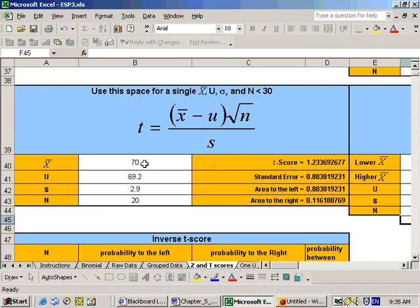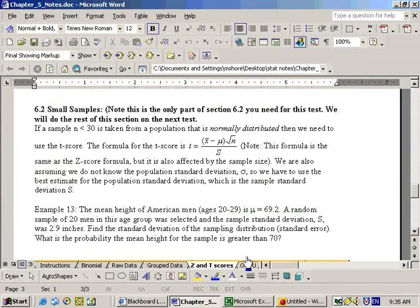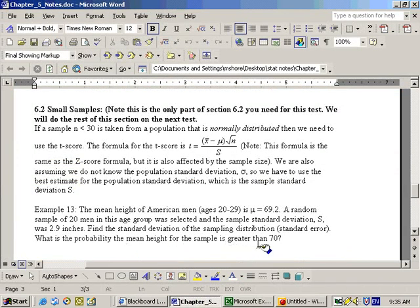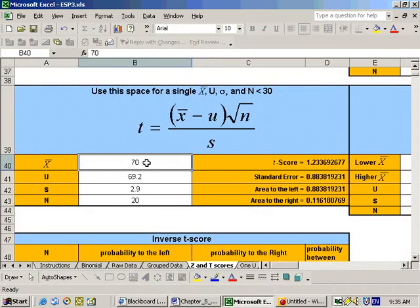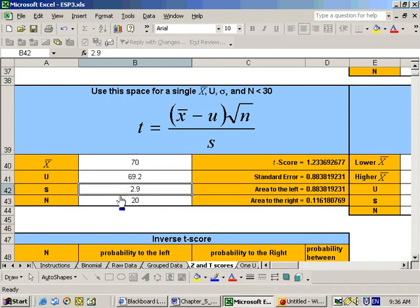Putting in our information, it wanted to know what's the probability that their average height of these 20 men is greater than 70. So that's saying that X-bar is greater than 70. So we use this area right here, X-bar is 70, and we'll use this area when we're looking for area to the right or to the left. In this particular problem, we're looking for the area to the right, since it says greater than 70. Our population mean mu is 69.2, and our sample standard deviation was 2.9, and our sample size was 20.